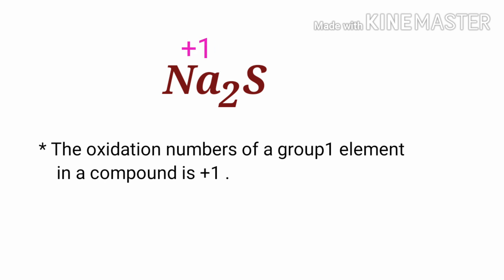We can write the oxidation number of the element above its symbol and the total oxidation number of the atoms below its symbol. Here two sodium atoms are present, so the total oxidation number of sodium is plus two.